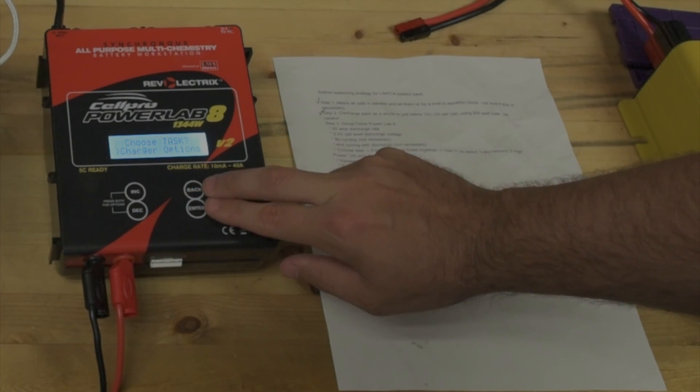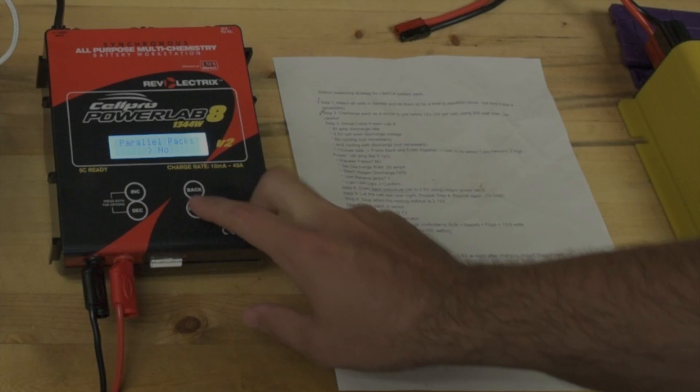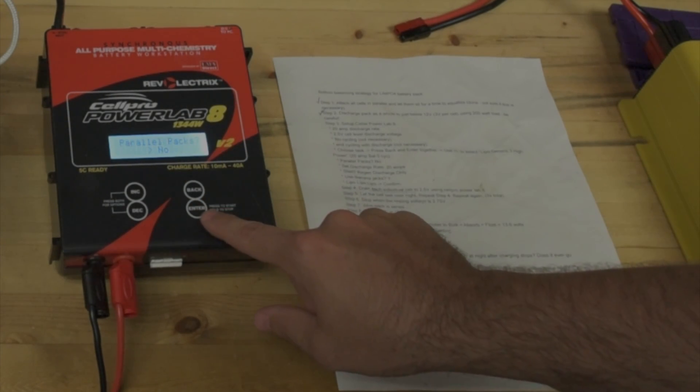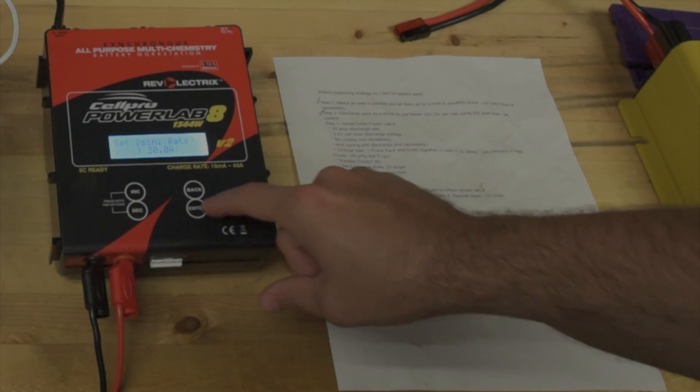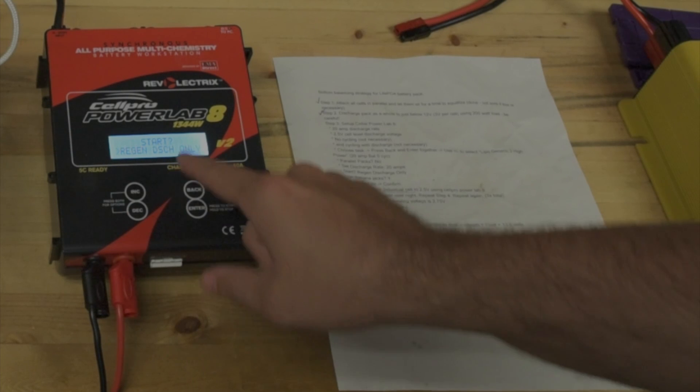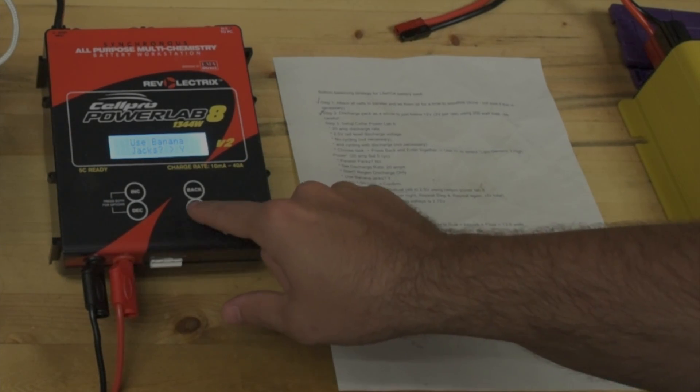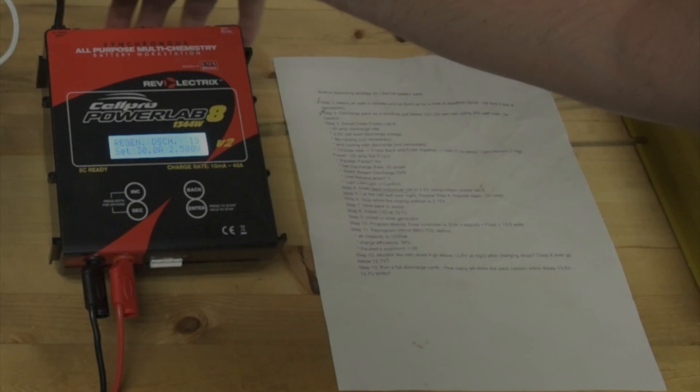LiPo high power generic, 30 amp discharge rate, regen discharge, use banana jacks. Checking pack, LiPo regen discharge. We should hear the fans start up and I should also see wattage going into my battery through my power meter.